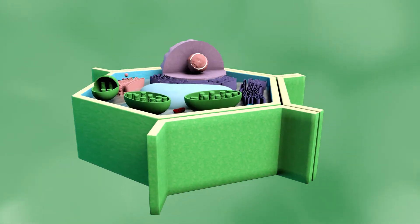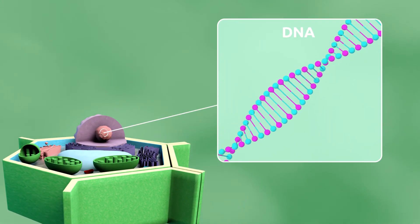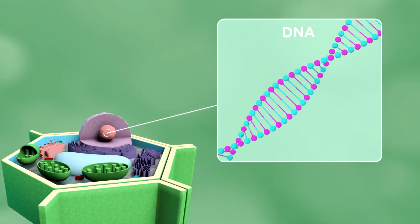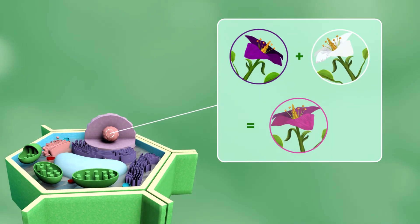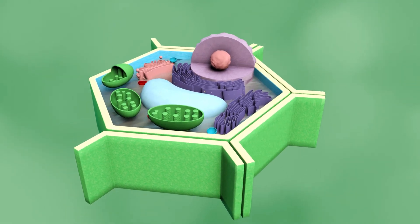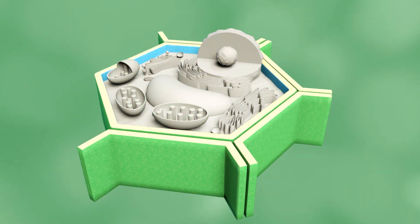DNA is stored in the nucleus of a plant cell and is made up of genes which hold genetic information. When plants reproduce, the genetic material passes on to the new plant, which is why new plants will have the same characteristics.